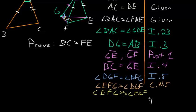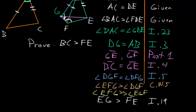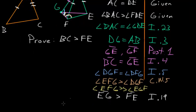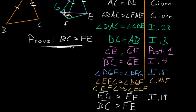To finish this proof, we use Book 1, Proposition 19, which says the biggest angle in a triangle subtends the biggest side. Focusing on triangle EFG, side GE is bigger than side FE because angle EFG is bigger than angle EGF. Since EG equals BC, we conclude that BC is bigger than FE — which is exactly what we were trying to prove. QED.